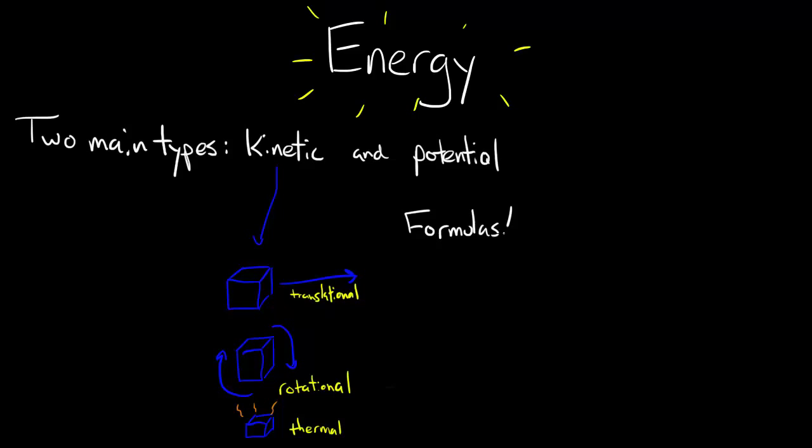Without going into the derivation of the formulas, which can get into some details that are unnecessary for our purposes, the formulas for kinetic energy are Ek equals one half mv squared for kinetic energy of translation, or kinetic energy equals one half mass times velocity squared.